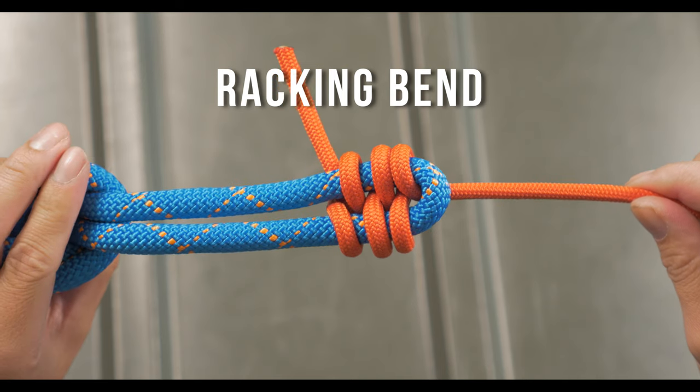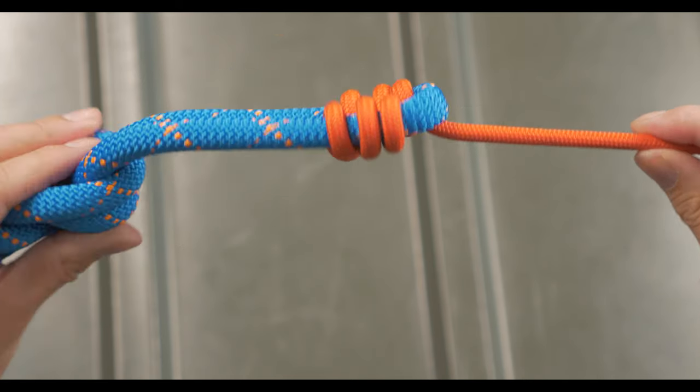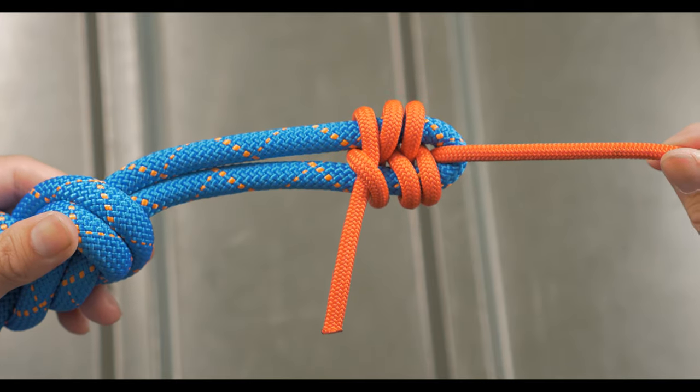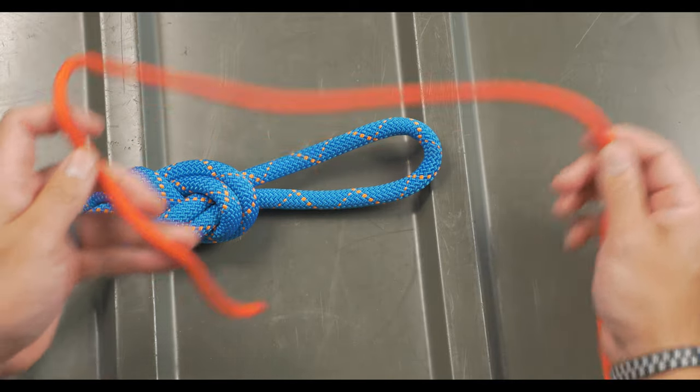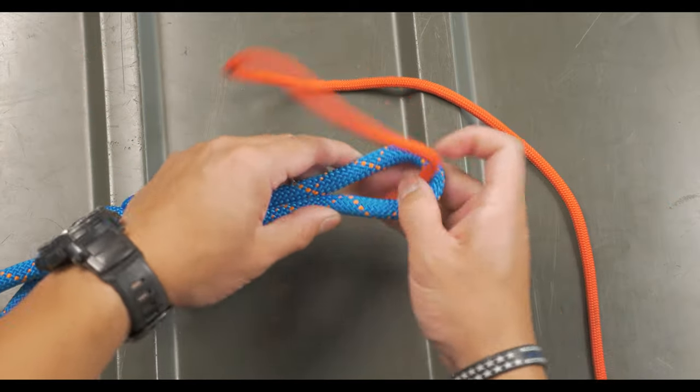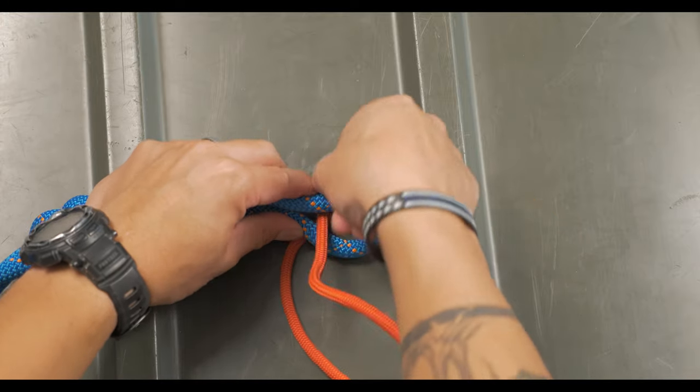The racking bend is the knot that I turn to if the diameters are super different, such as a heaving line for pulling a much heavier diameter rope. The heavier rope can be either on a bite or on a loop knot, such as the figure eight loop shown here. Bring the working end of the smaller diameter rope through the eye and make a series of figure eight weaves.